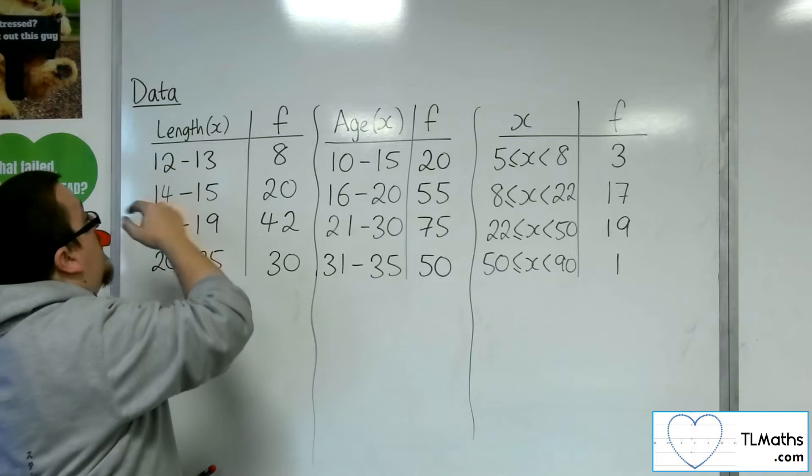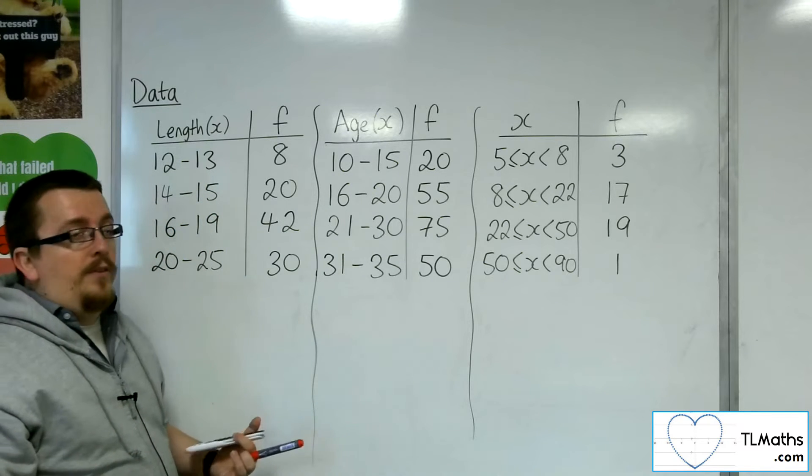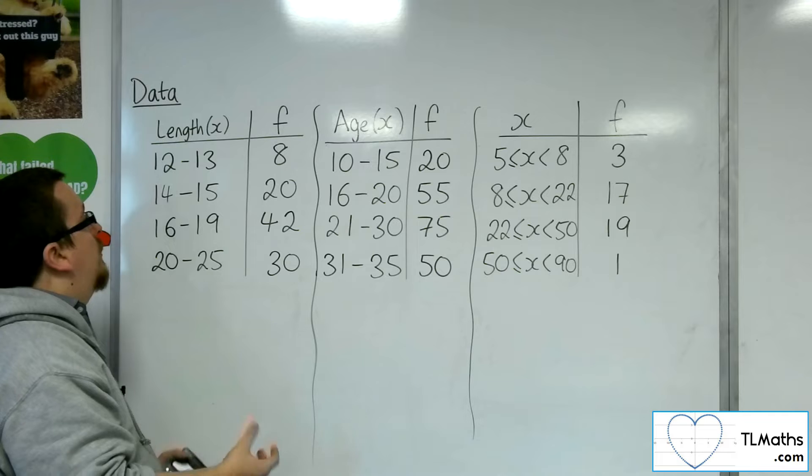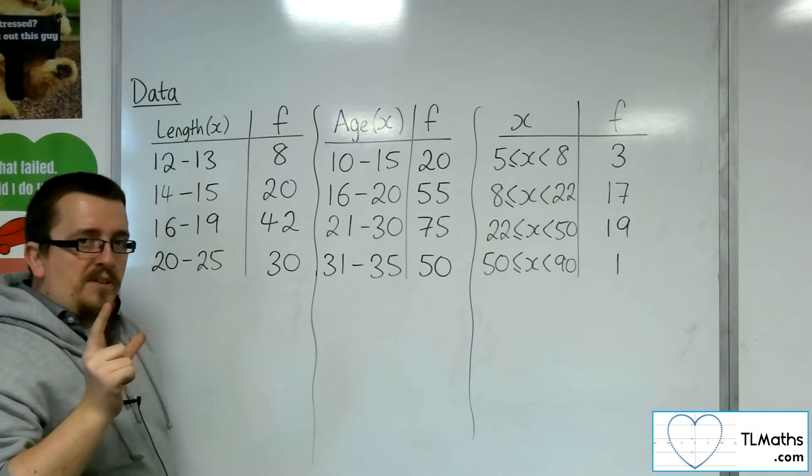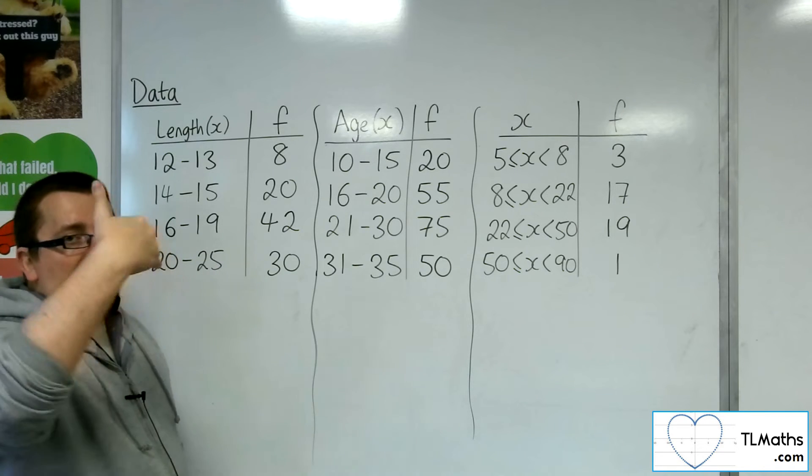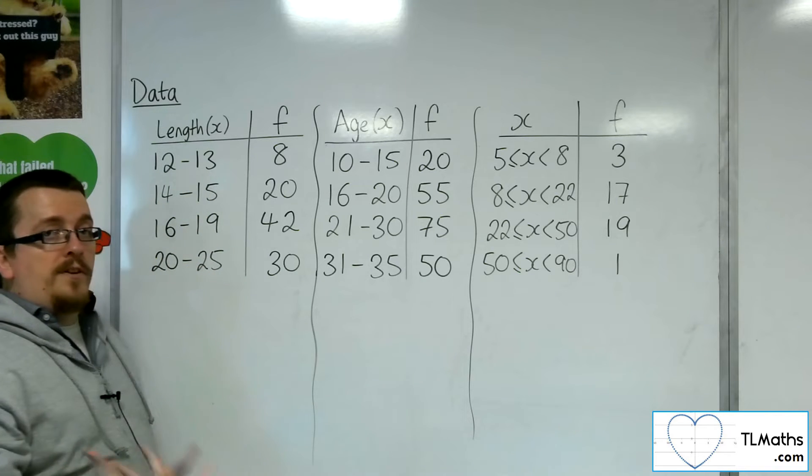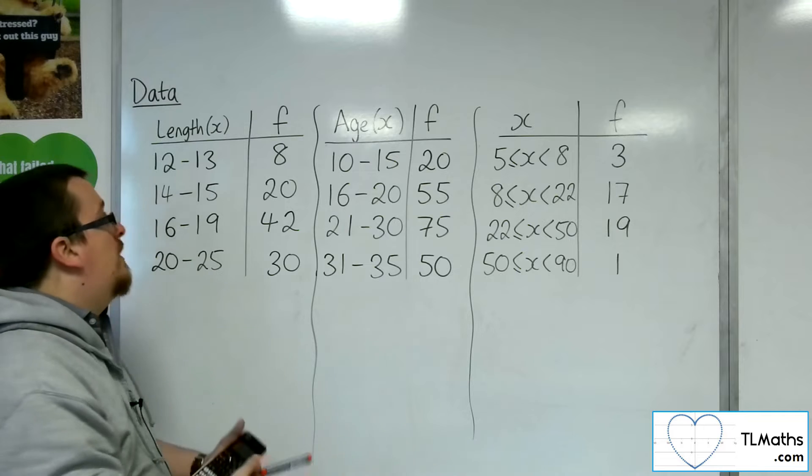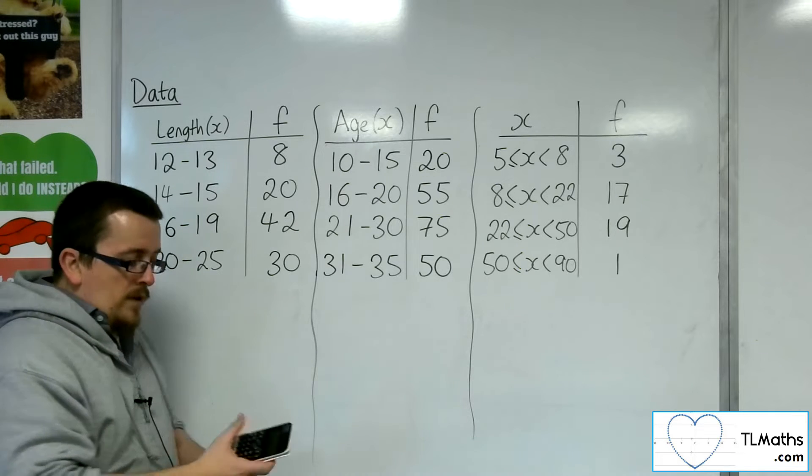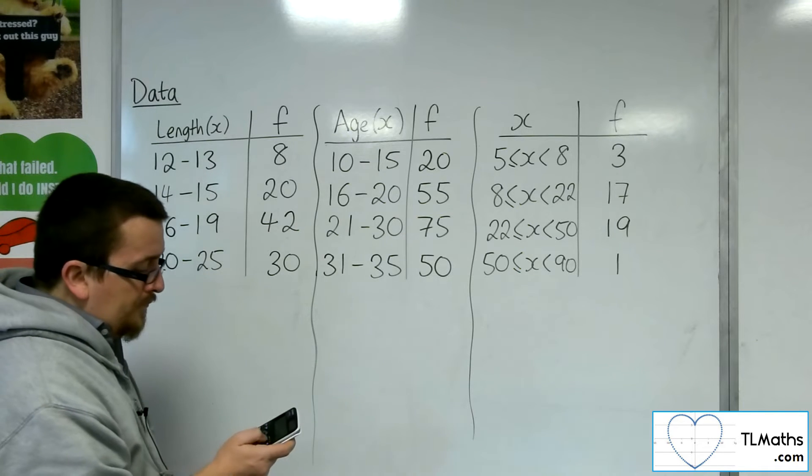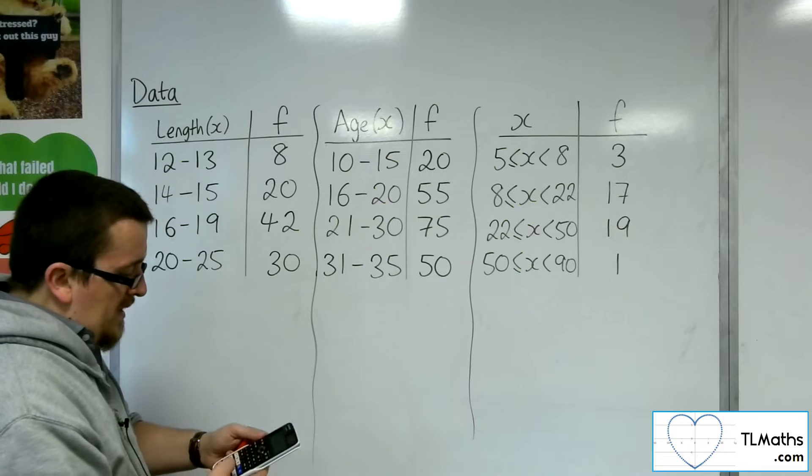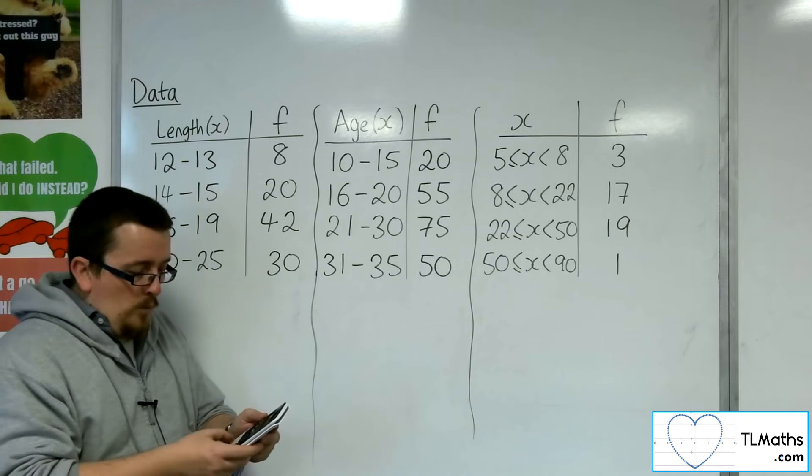Here, what we can do is find each of the midpoints to make that easier for ourselves. You can just add the two numbers together, 12 and 13, and then divide that by 2. So 12 and 13 is 25, divide that by 2, you get 12.5. So you want to go into your calculator, go to menu, and then number 6 for statistics, and then one variable.